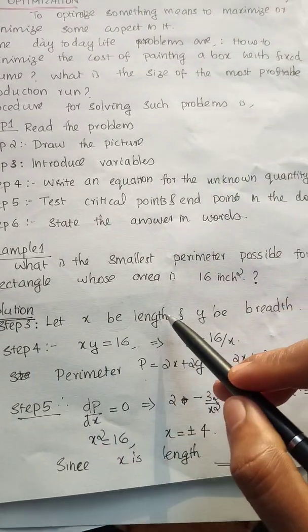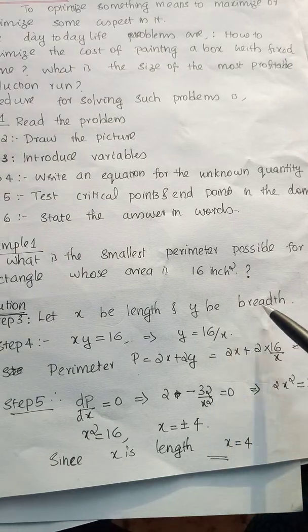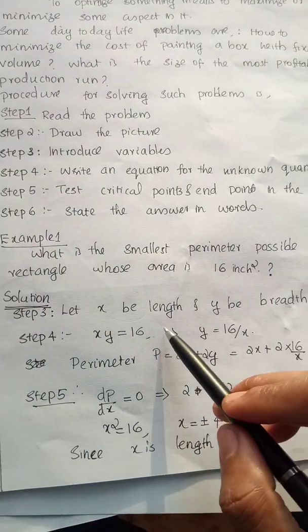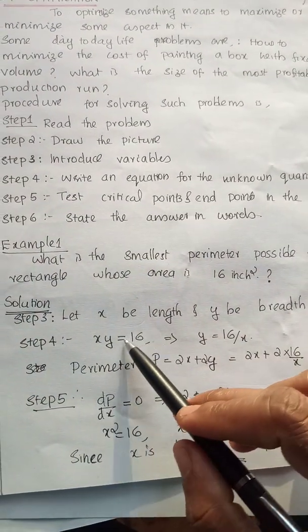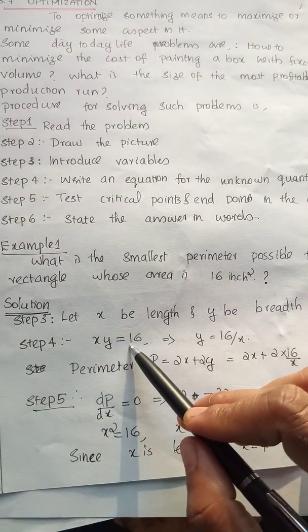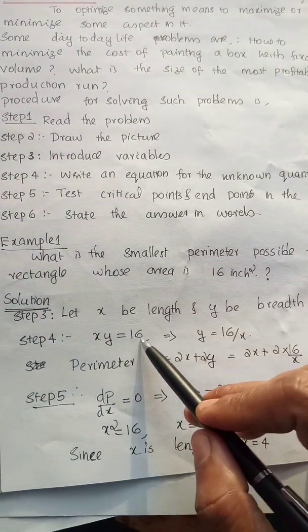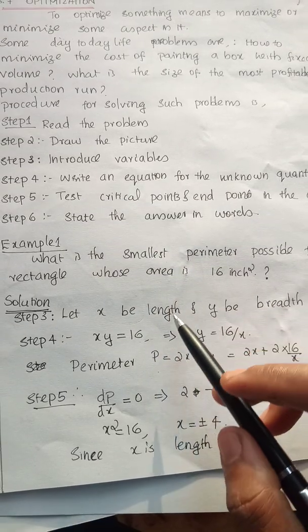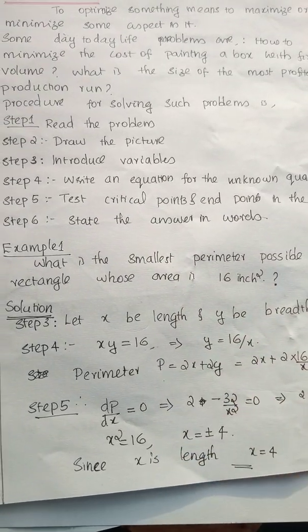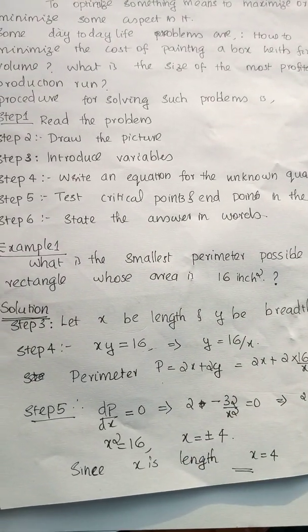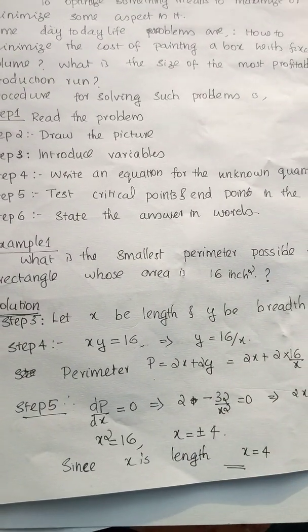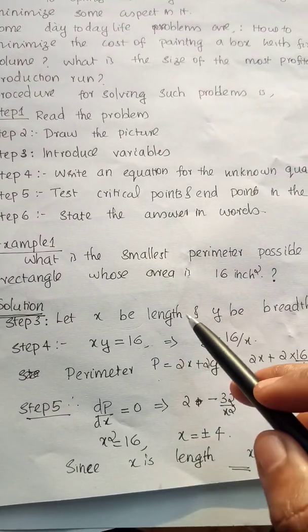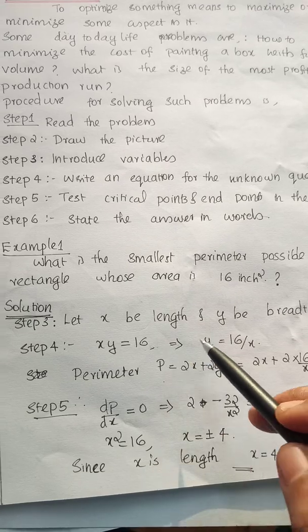Let x be the length and y be the breadth. Given data: x times y equals 16. From that we can express one variable in terms of the other — we have two variables, and from the constraint we get one variable in terms of the other.